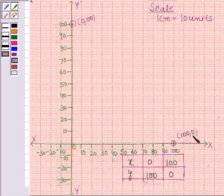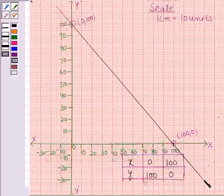Now we will join these two points by a straight line. This is the line representing the equation X plus Y is equal to 100.